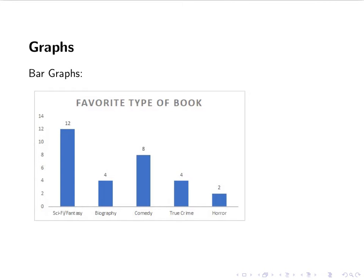So here's an example of a bar graph. The title is Favorite Type of Book and a bar graph is discrete data, so in two different categories. We have sci-fi, fantasy, biography, comedy, true crime, and horror. So each of my things on the x-axis are a different category and then on the y-axis is the number of people that chose that type of book as their favorite.